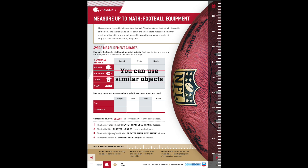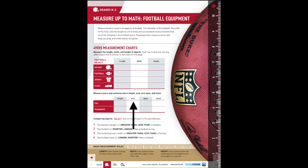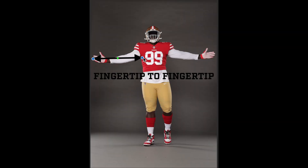And instead of a jersey, you can measure one of your own shirts. Next up on the page, we have a space to measure yourself, a friend, a sibling, or a parent. You can measure height, how long one arm is, and maybe even how long from one tip of one finger stretched all the way to the other tip of the finger on the other hand.